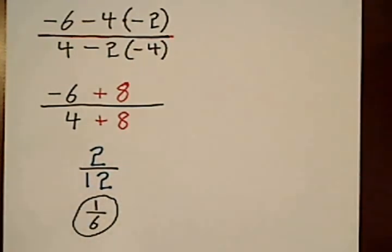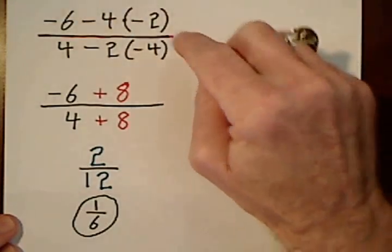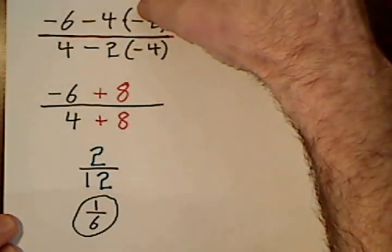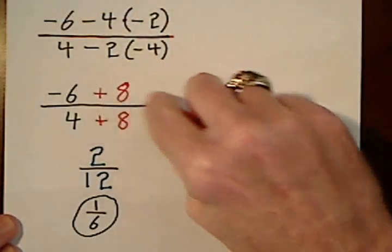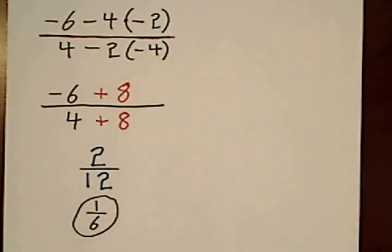All right. If you're a little confused about the step I took here, where I said that's a negative 4 times a negative 2, yielding a positive 8. If you want to understand how I'm reading that, I have a video that does explain it. Slide this in here.